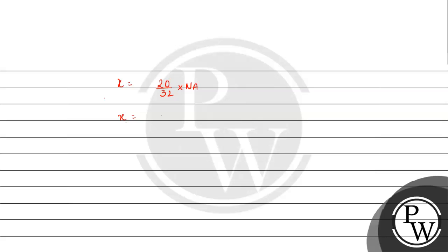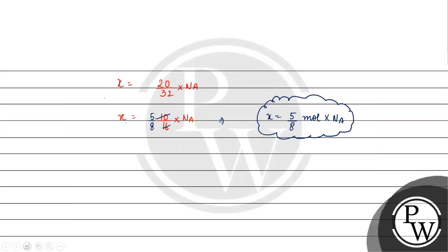So x equals 20 by 32 into Avogadro's number, which simplifies to 5 by 8 mol into Avogadro's number. This is the number of molecules of oxygen. Now, 1 molecule of oxygen has 2 oxygen atoms.